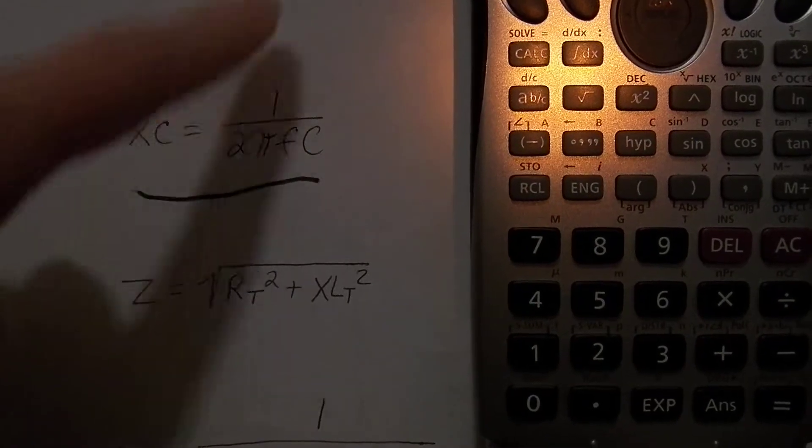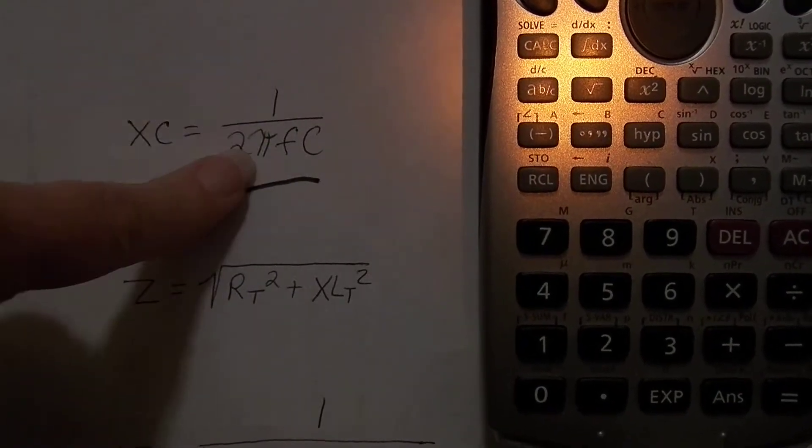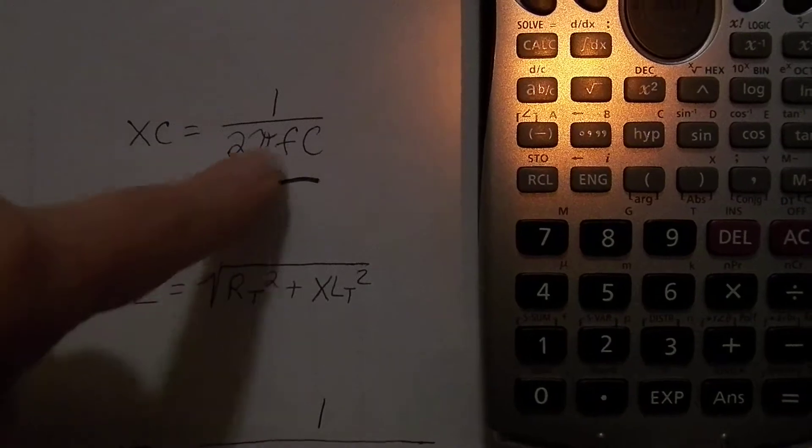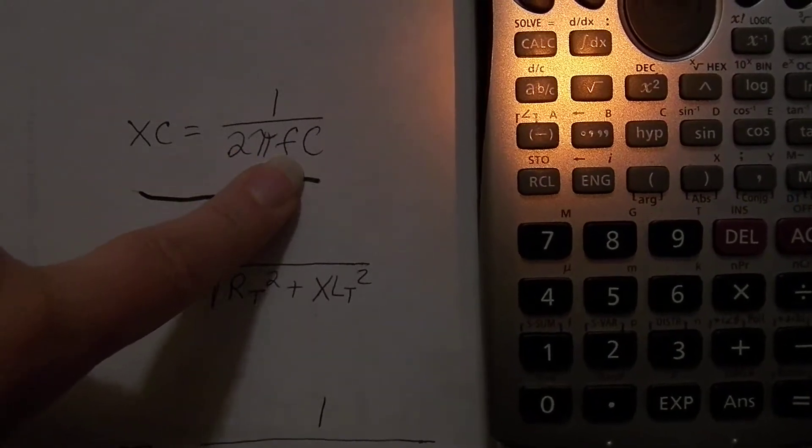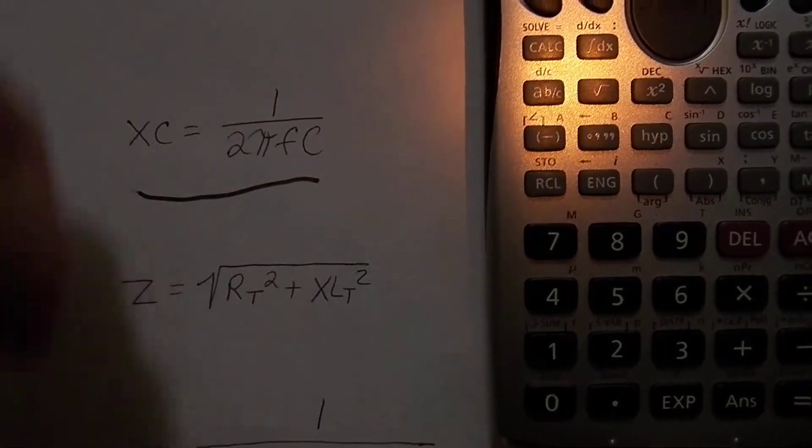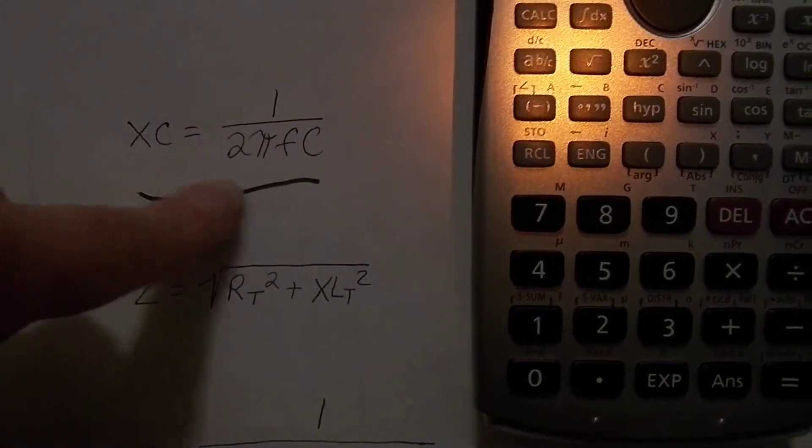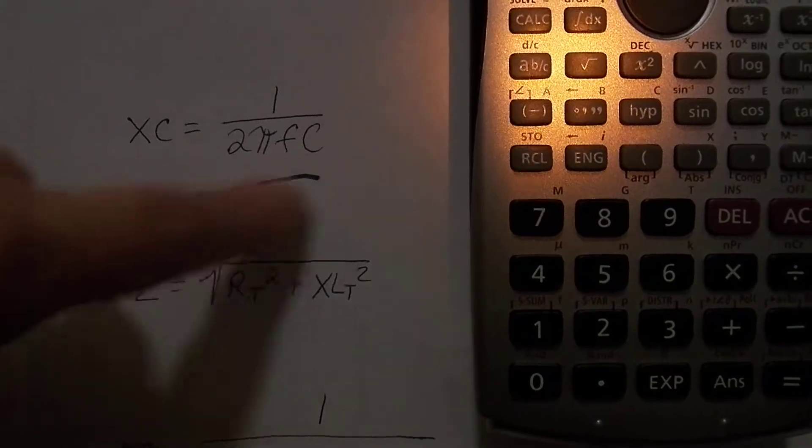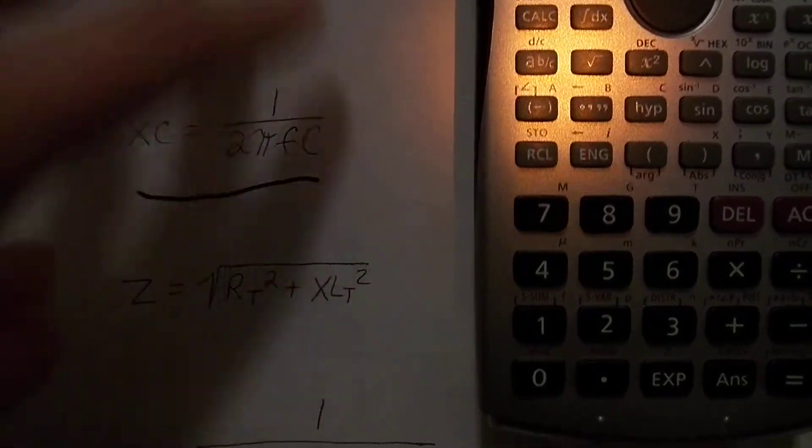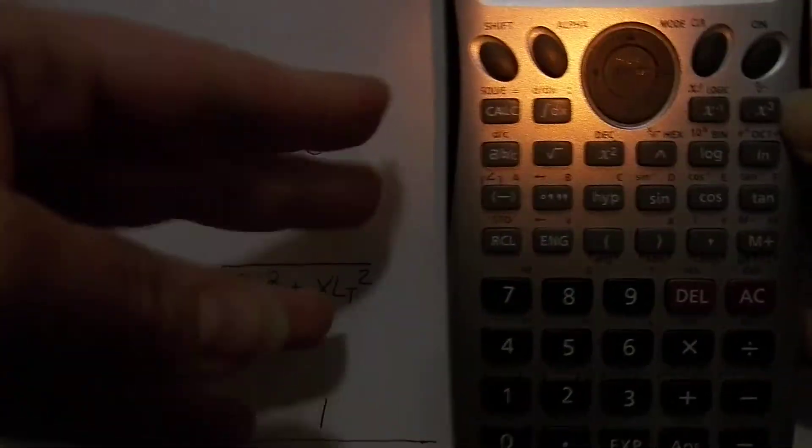And then it would multiply it by frequency and then it would multiply it by capacitance. And you can see that that's not going to work for us. We need the combined value of 2π, frequency, and capacitance, and then take 1 over that combined value.